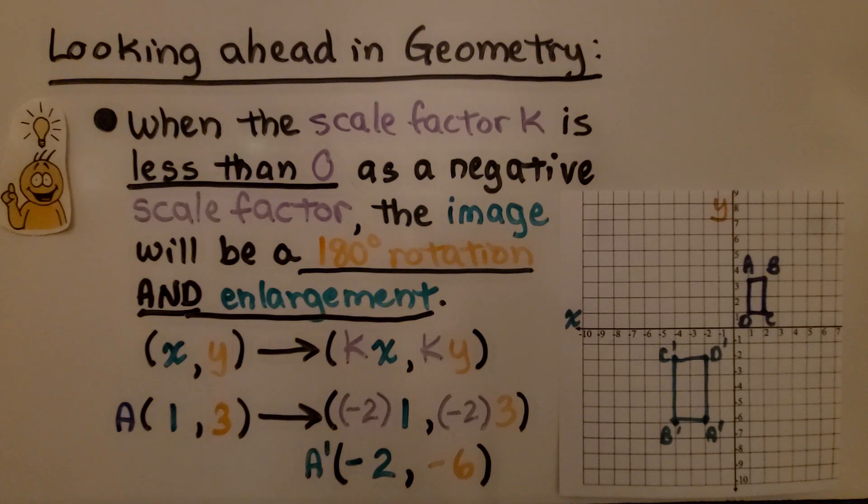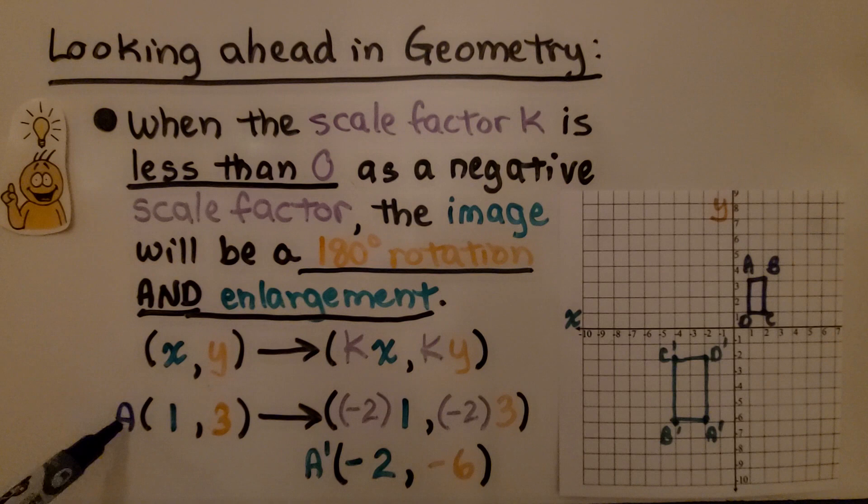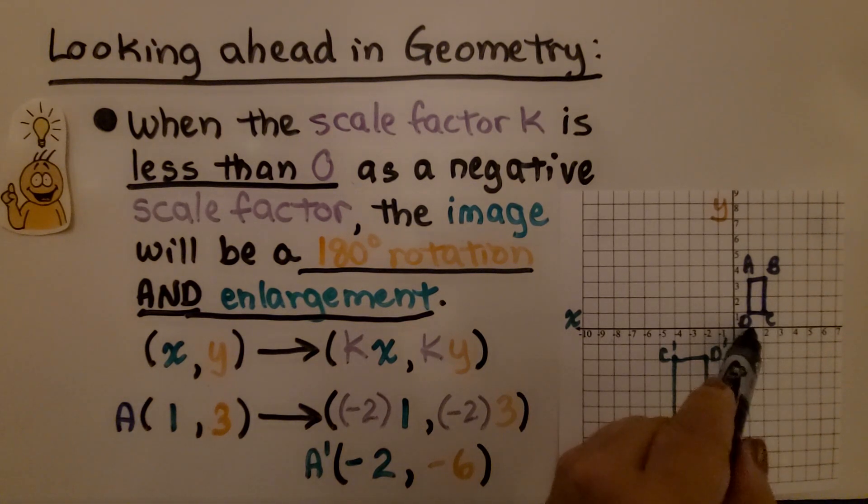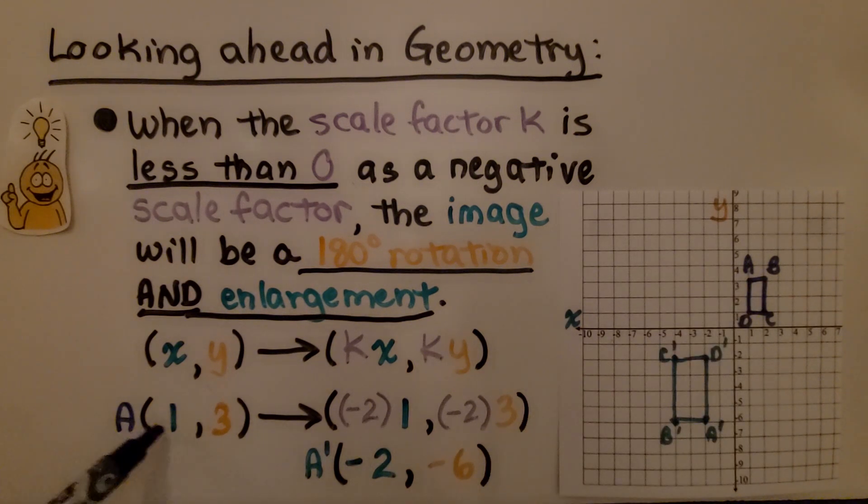the image will be a 180 degree rotation and an enlargement. If we know that k is negative 2 and we've got the preimage vertex A is at 1 and 3, 1 for x, 3 for y,